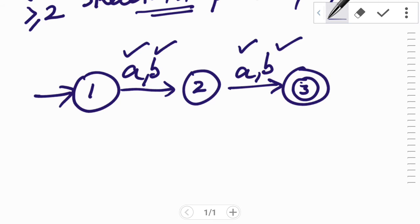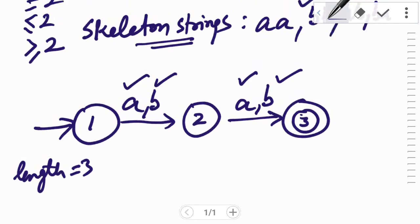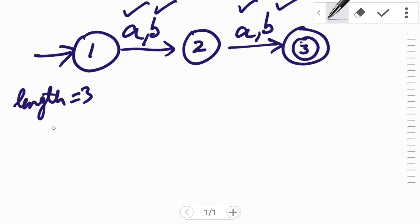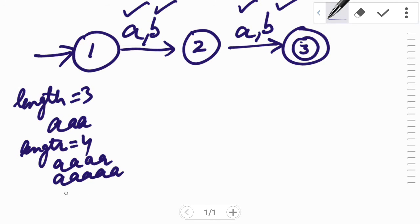Now look for the strings of length more than 2. The string of length 3 is triple a, the string of length 4 can be 4 a's, again 5 a's can also be accepted, 6 a's can also be accepted.